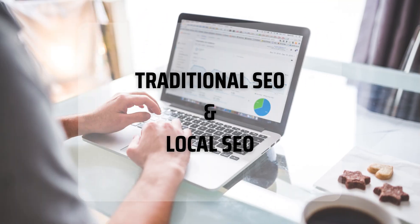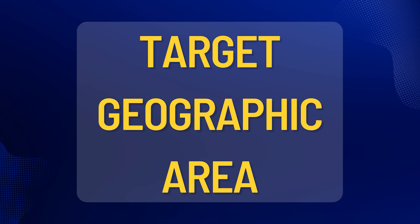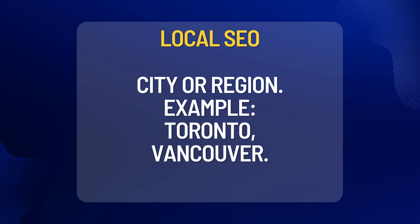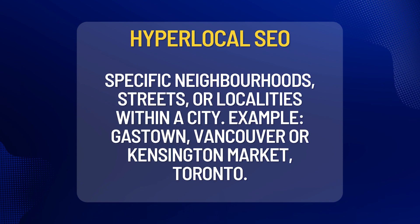To put Hyperlocal SEO into perspective, let's compare it with Traditional SEO and Local SEO with examples of how it applies to Canadian local businesses. For a targeted geographical area, Traditional SEO focuses on a national or international scale — you might include the phrase 'Canada-wide services.' For Local SEO, you would drill that down to the city, like Toronto or Vancouver. And for Hyperlocal SEO, you would drill down even further to specific neighborhoods, streets, or localities within a city — so for example, Gastown in Vancouver or Kensington Market, Toronto.